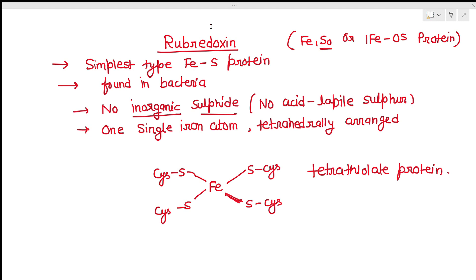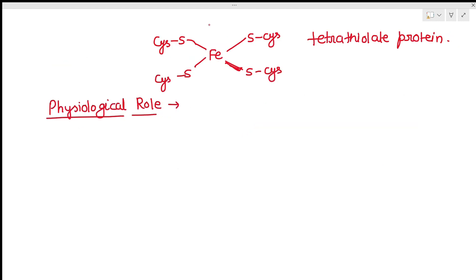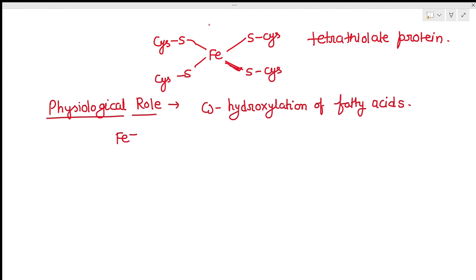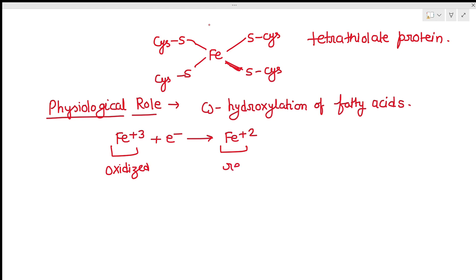The physiological role of rubredoxin is not always known with certainty, but some rubredoxins participate in the omega-hydroxylation of fatty acids. In rubredoxin, iron is present in the +3 oxidation state. As an electron transfer protein, it shuttles between two oxidation states: in the oxidized state, iron is +3, and in the reduced state, iron is +2.